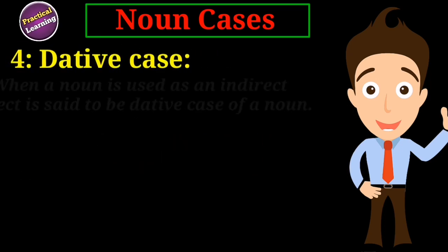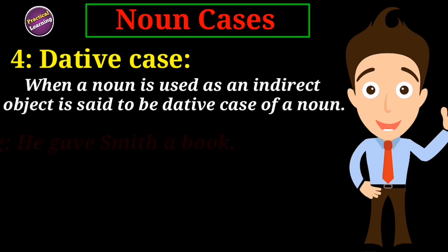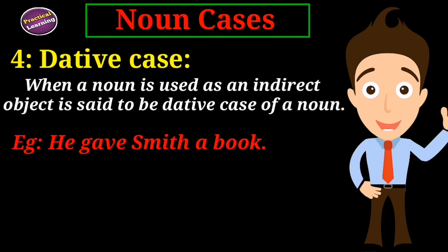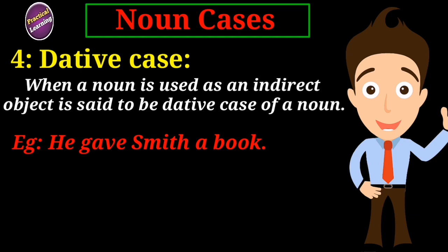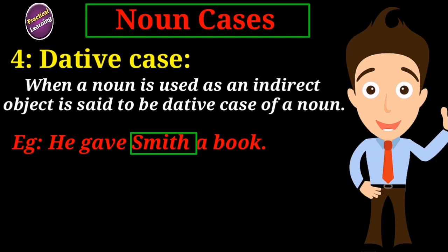Dative case. The dative case of a noun is that case which shows the indirect object of a verb. For example, 'He gave Smith a book.' Here there are two objects — a direct object and an indirect object — which are Smith and a book. Smith is the indirect object, so it is a dative case of a noun.